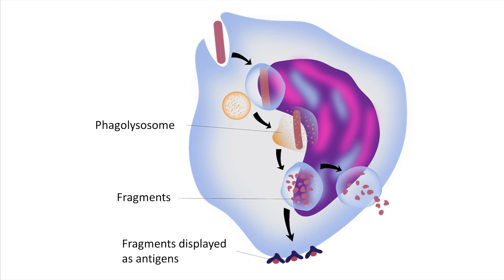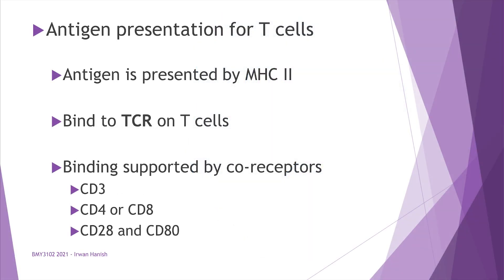After degradation by phagolysosomes, some fragments of killed pathogens are excreted, but other fragments are kept by the phagocytes. The phagocytes bring these fragments to the cell surface and display them as antigens — like a monster that eats you and displays parts of your body on its surface. The phagocyte, now an APC, brings the antigen and presents it to T cells and B cells on MHC class II molecules.